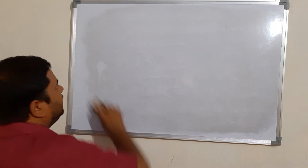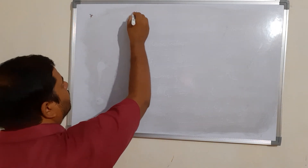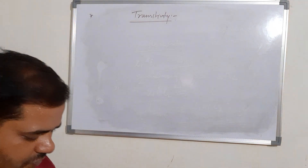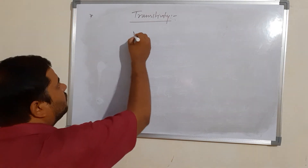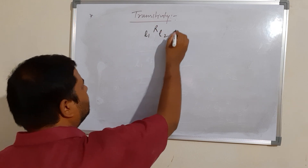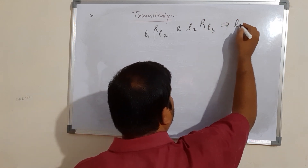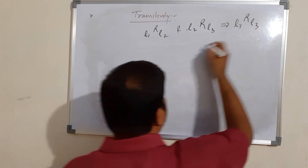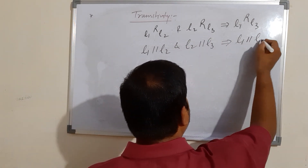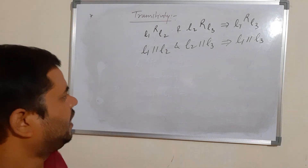Now checking transitivity for this relation: if l1 is R-related to l2 and l2 is R-related to l3, this implies l1 is R-related to l3. That means if l1 is parallel to l2 and l2 is parallel to l3, then l1 must be parallel to l3. This is by Euclid's geometry. Try to solve more and more questions based on this particular exercise. Thank you.